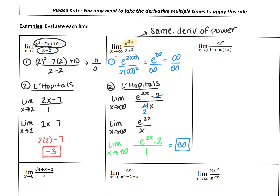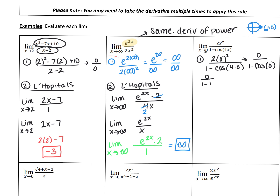Okay, let's try some more — the more we do, the better we'll get. Example 3: Step 1, direct substitution. Everywhere I see an x, I put in 0. The numerator is clearly 0. The denominator is 1 minus cos of 4 times 0, which is 1 minus cos of 0. Cosine of 0 on the unit circle is 1, since cosine is the x-value. So we have 0 over 1 minus 1, which is 0 over 0. Since we have 0 over 0, we can apply L'Hopital's Rule.